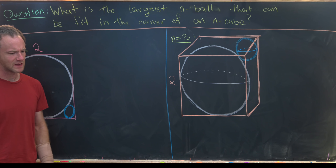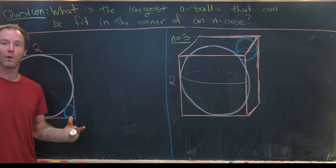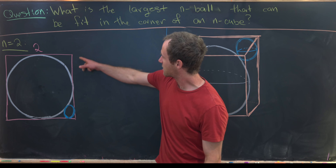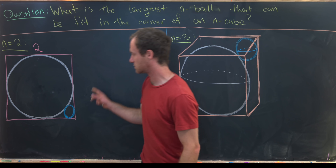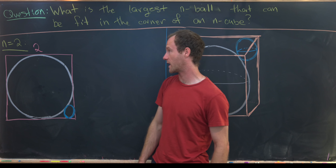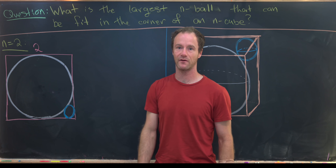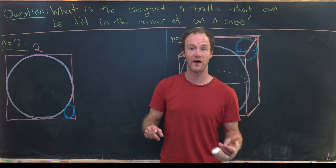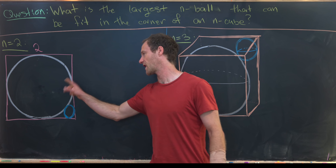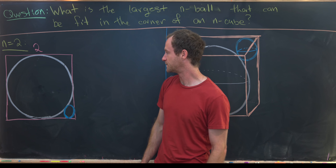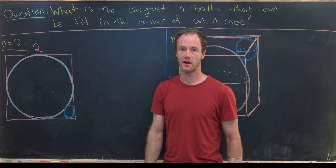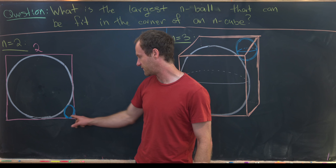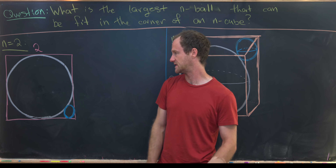So what do I really mean by fit in the corner? I'm going to illustrate this with two examples first. Here I've got a two-dimensional cube — in other words a square — with a side length of one, and then I have a two-dimensional ball, in other words a circle with the stuff filled in inside of that square. Our goal is to find the largest circle that I can fit in the corner of this setup.